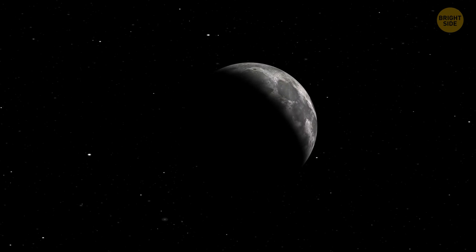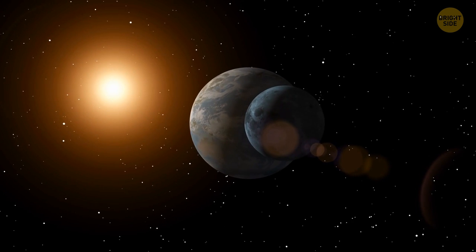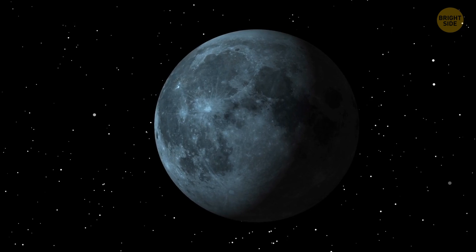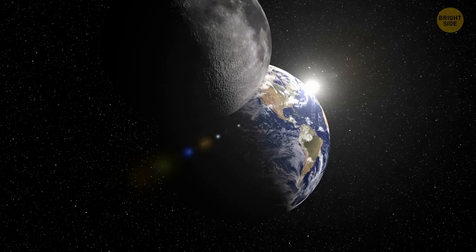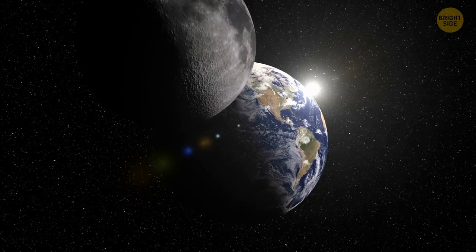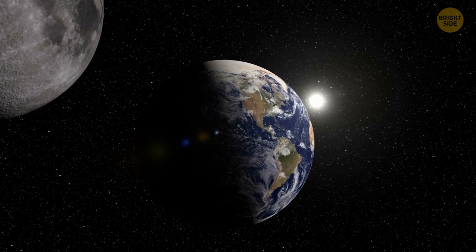Even though the far side is often called dark, both sides get almost the same amount of sunlight. The side we see looks a bit brighter because of the glow coming from Earth. There are two reasons why people are interested in exploring the far side of the moon.